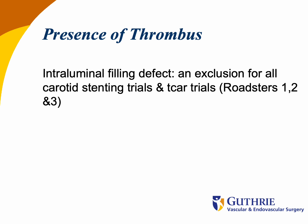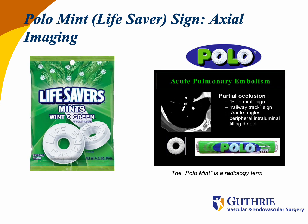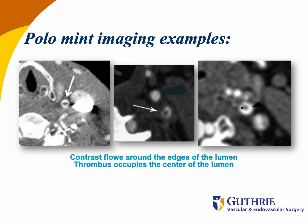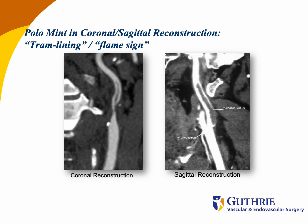Intraluminal filling defects or the presence of thrombus has been an exclusion criterion for all carotid artery stenting trials as well as T-CAR trials. Identifying thrombus on a CT angiogram is critical to avoid thrombotic complications. This is described as the polo mint sign, essentially contrast flowing around the edges of the lumen with thrombus occupying the center. This can also be identified on sagittal views of a CT angiogram. Those patients should be identified and treated with carotid endarterectomy rather than T-CAR to avoid thrombotic complications.